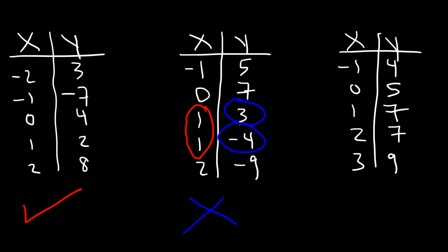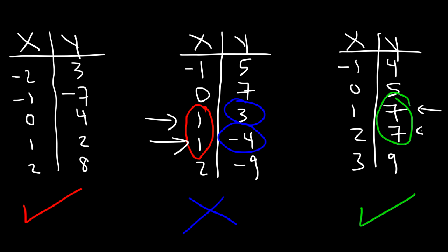What about the last example? We have two y values that repeat, but that's okay. You can have multiple y values that correspond to different x values, but you can't have the same x values corresponding to different y values. So the third one is a function. When x is 1, y can be 7, and when x is 2, y can still be 7. If two x values correspond to different y values, it's not a function; but two of the same y values with different x values is still a function.